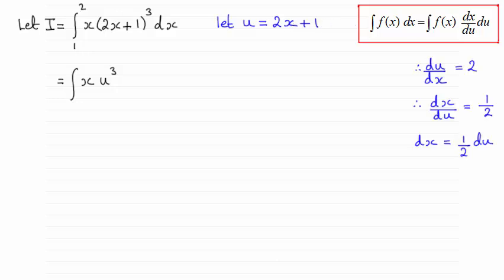Or we can rearrange for dx by differentiating this expression here with respect to x. And if you do that you're going to have du dx equals 2. dx du will be the reciprocal of 2 which will be a half. And then dx will be equal to a half du.